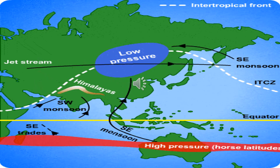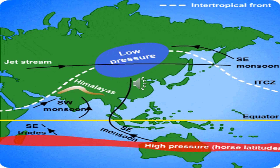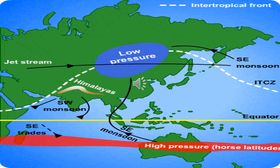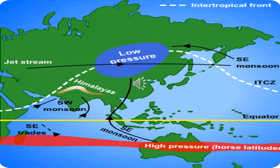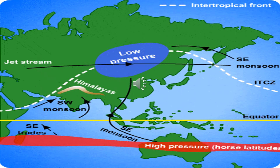Pakistan receives most of its rainfall due to monsoon winds. Monsoon is a seasonal wind which originates from a water body and moves towards land. This wind is caused due to a pressure difference between sea and land, which is directly linked with the temperature difference. The land heats up quickly and loses its heat quickly, while water does not heat up very quickly, creating a temperature difference.